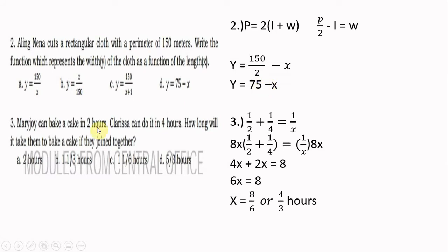Number three: Mary Joy can bake a cake in two hours; Clarissa can do it in four hours. How long will it take them to bake a cake together? This is a work problem. The part of the job done by Mary Joy in one hour is one-half, and by Clarissa in one hour is one-fourth. Adding all parts equals the total part done per hour together.